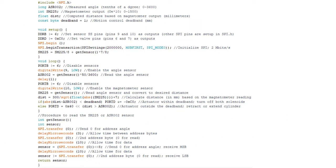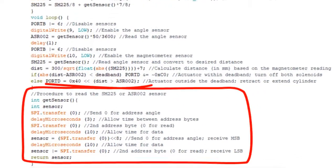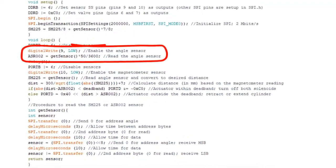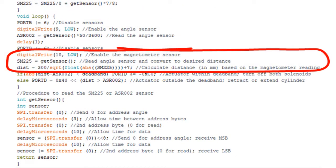Here's the Arduino program. There's a procedure for reading the sensors, which is a simple 4-byte sequence. We read the angle sensor and the magnetometer.